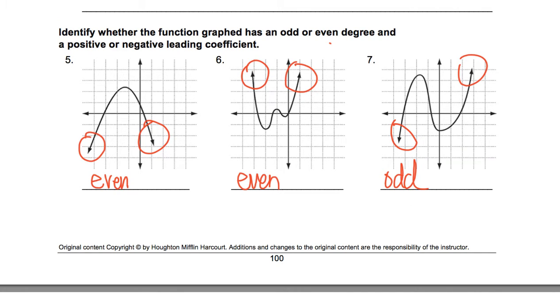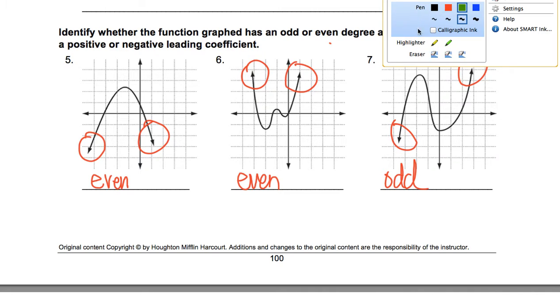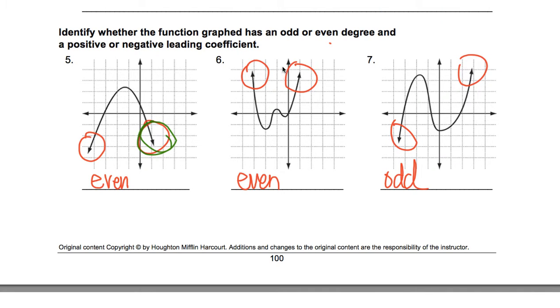Now the leading coefficient, you look at this, the one on the right. If the leading coefficient is pointing up, it's positive, so these are positive. And then your other one over here is pointing down, so that's negative. And that's how you would do those problems.